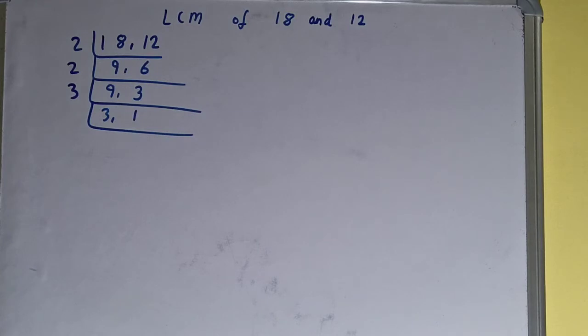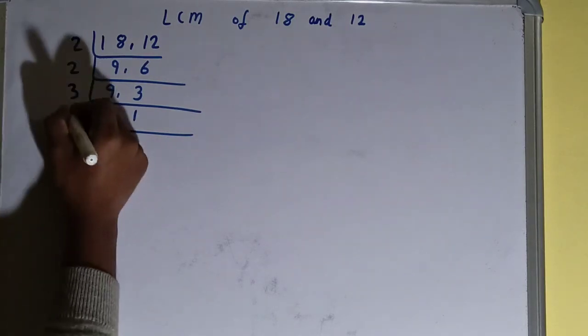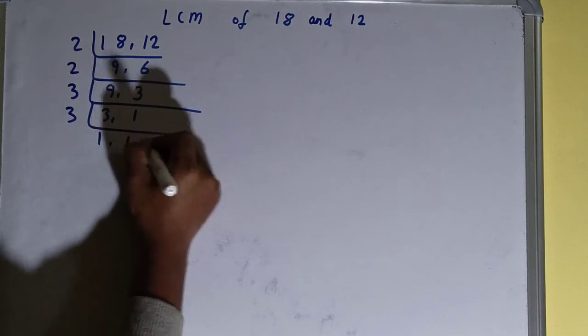Now again, if we see, only the first number is divisible by 3, so we'll divide and we'll be having 1 comma 1.